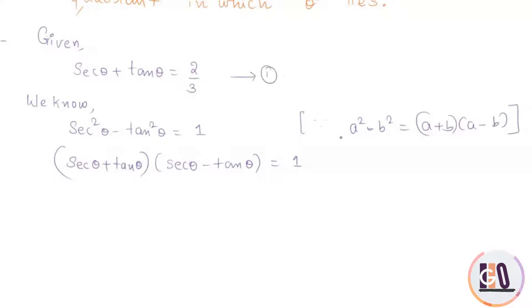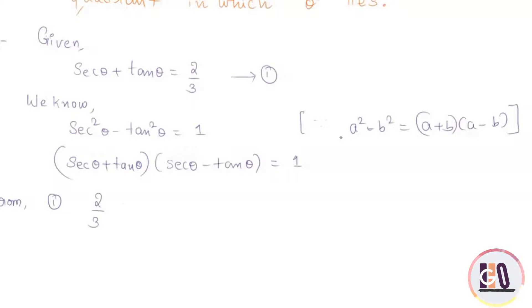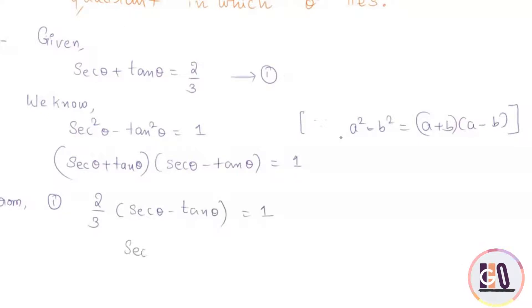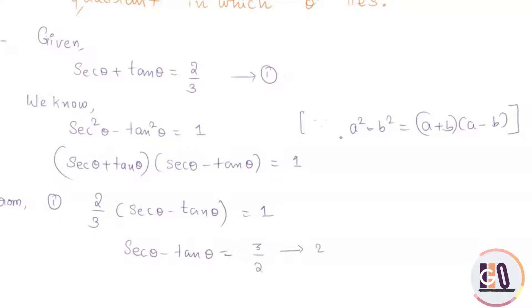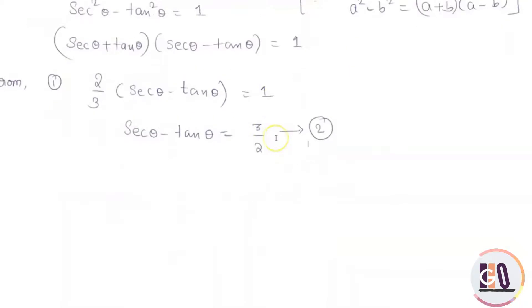Say this is equation 1. From equation 1, sec θ plus tan θ equals 2 by 3. Substituting 2 by 3 here, into sec θ minus tan θ, gives 3 by 2. So sec θ minus tan θ equals 3 by 2. Labeling it as equation 2.